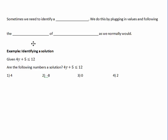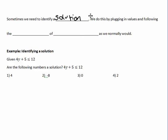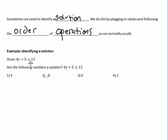Sometimes we need to identify a solution. We do this by plugging in values and following order of operations — that's PEMDAS as we normally would. Let's try this example: we're given 4y + 5 ≤ 12.